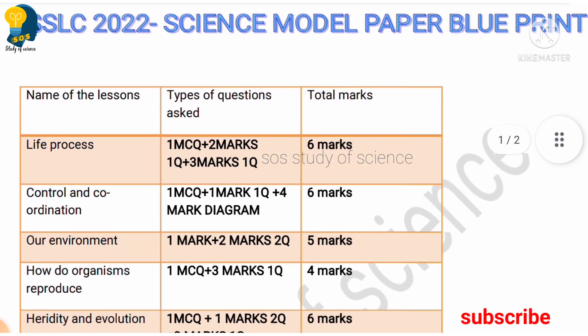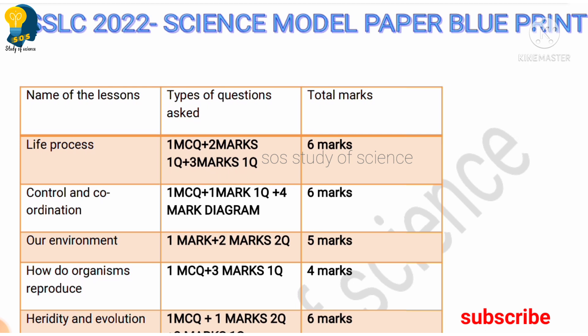We look at the blueprint for each and every lesson. For the Life Processes lesson, they have totally allotted six marks, out of which there is one multiple choice question, one two-mark question, and one three-mark question — so totally six marks has been allotted for Life Processes.